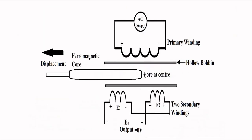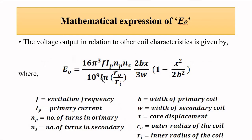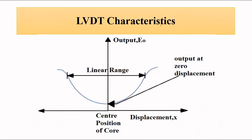That is the position of the core with respect to the center position. On either side, it does not matter what is the position of the core. So r₀ is the outer radius and rᵢ is the inner radius of the coil. This is the mathematical expression for the output voltage.